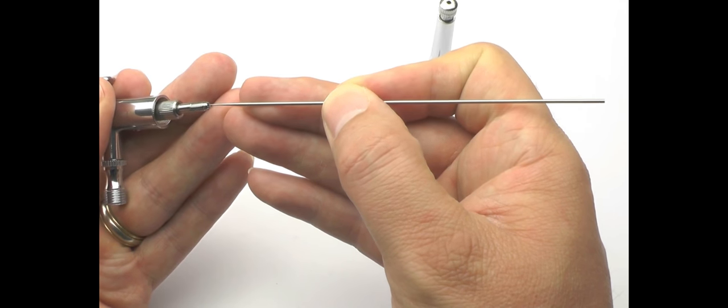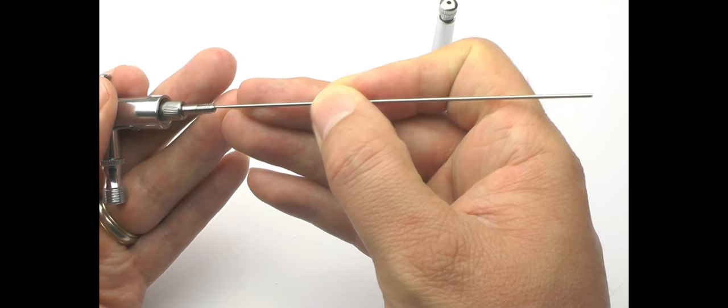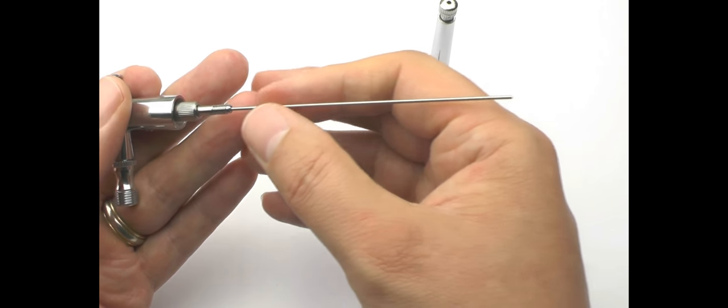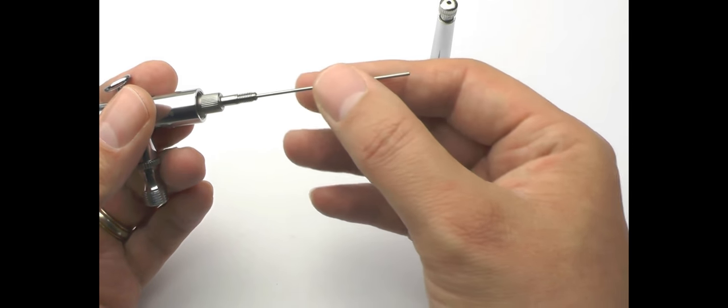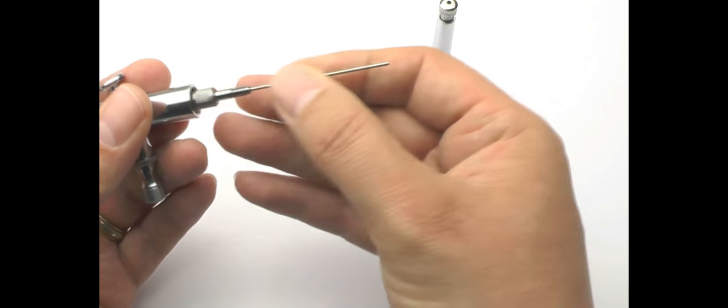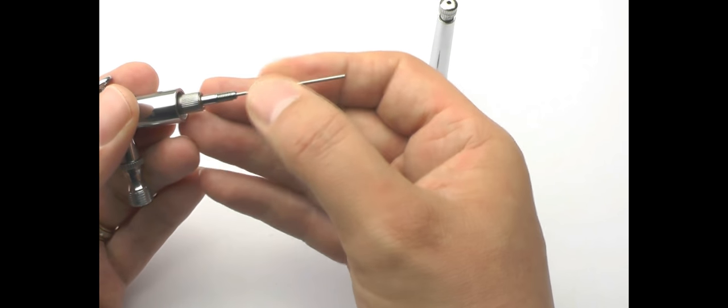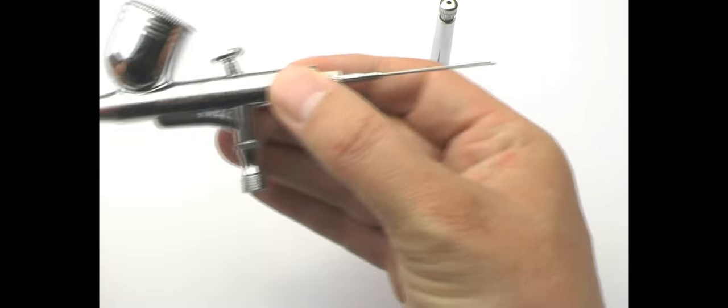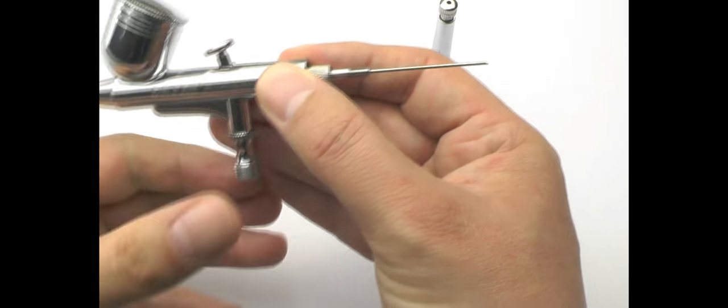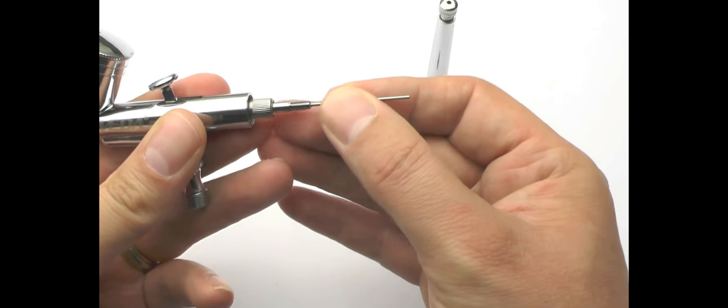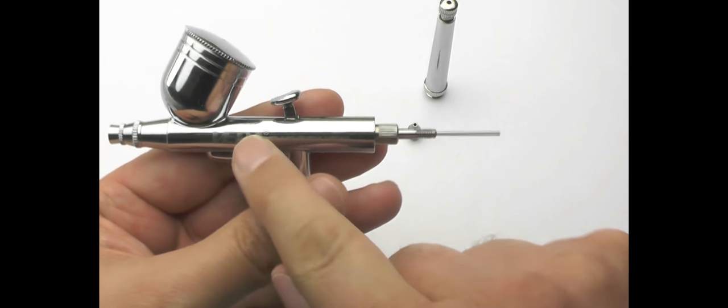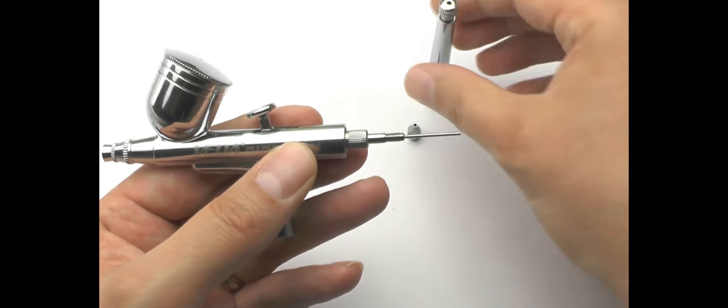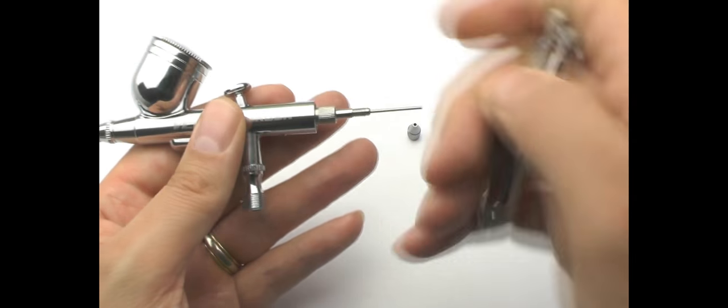So we'll just put that back in. It's just a case of sliding at home quite gently. And you'll feel a bit of resistance, and that's because there's a packing nut, a Teflon washer, that stops the paint traveling back this way along the airbrush, prevents spillages and so forth.